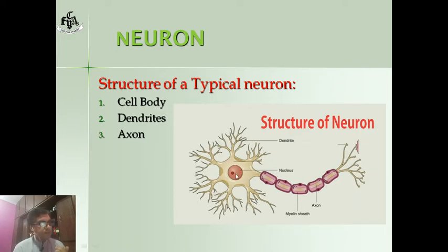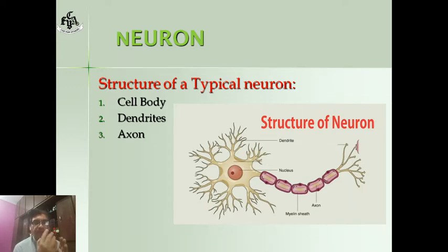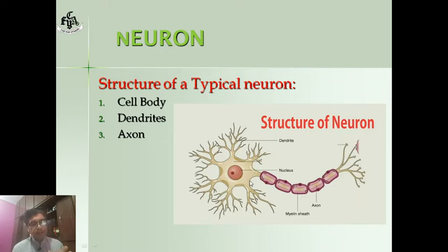First of all, the cell body. The cell body is the central part of the neuron, and the cell body is always present in the spinal cord or in the brain. Inside the cell body, a nucleus is present, along with cytoplasm and some other cell organelles.